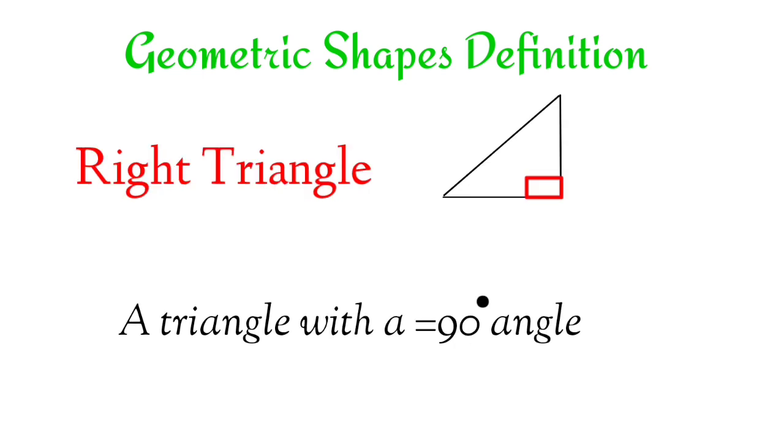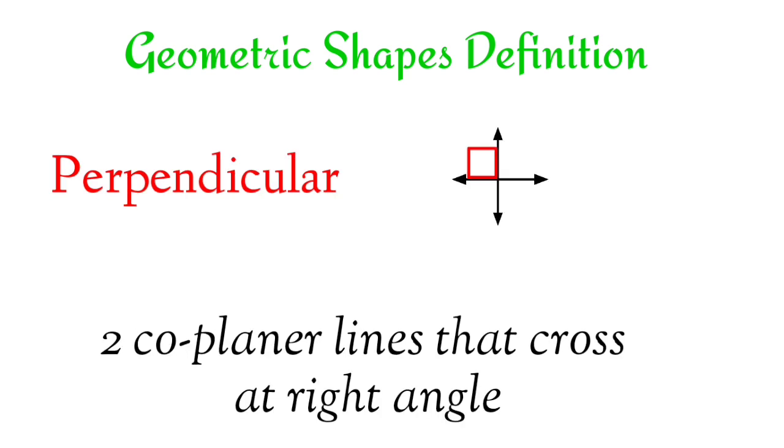Right triangle. A triangle with a 90-degree angle. Perpendicular. Two coplanar lines that cross at a right angle.